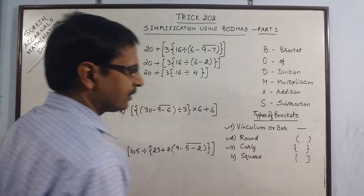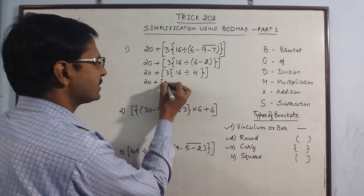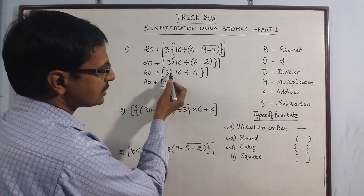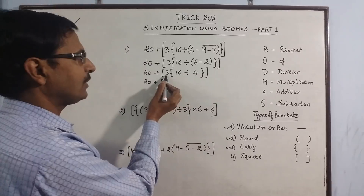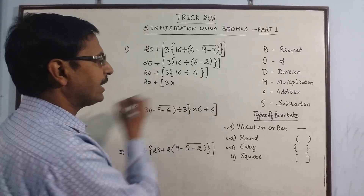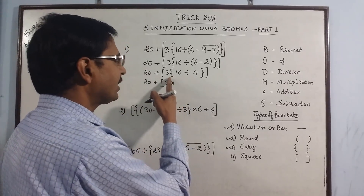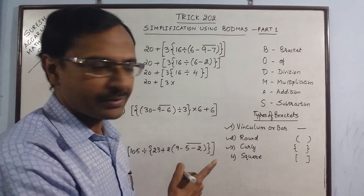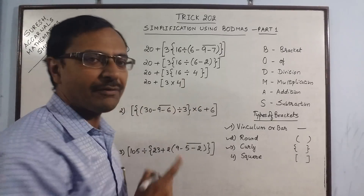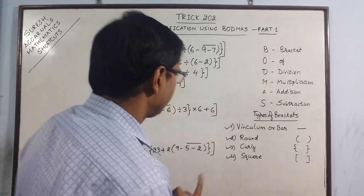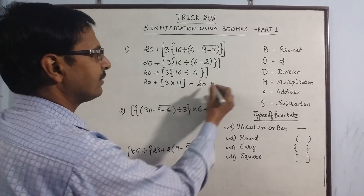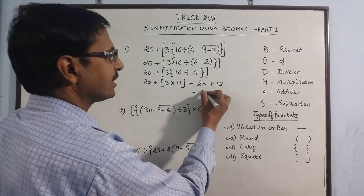Now look for the curly bracket. We have 20 plus, then 3 — and whenever there is no sign between a number and a bracket, we write multiply. In the curly brackets we have 16 divided by 4, which equals 4. Now only the square bracket remains. Removing the square bracket: 4 times 3 is 12, so 20 plus 12 gives a final answer of 32.